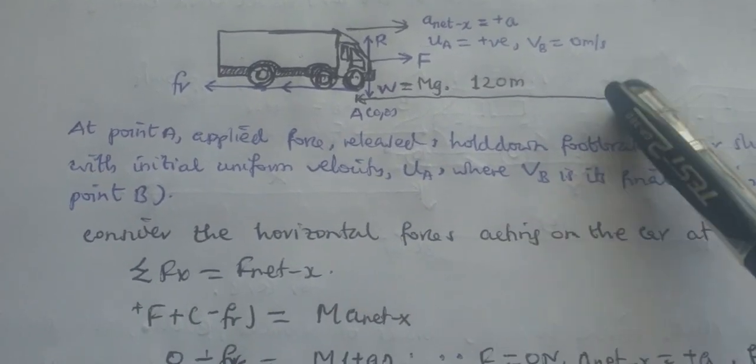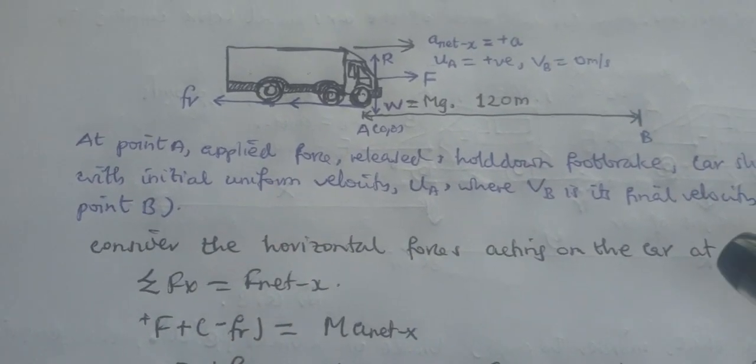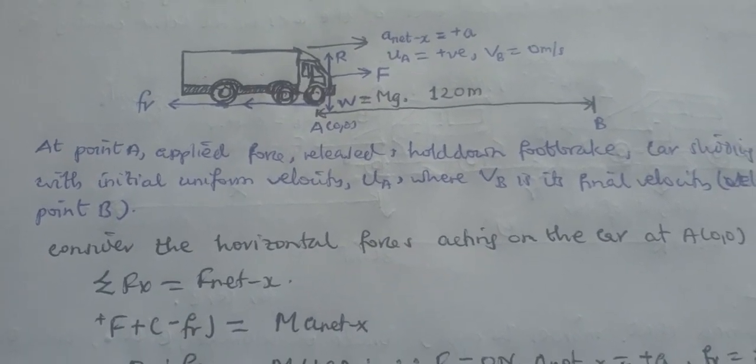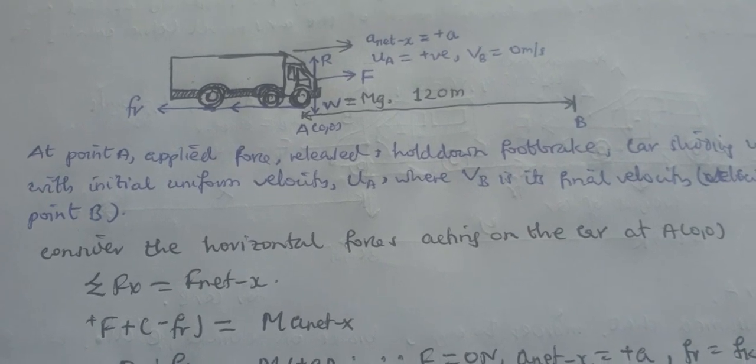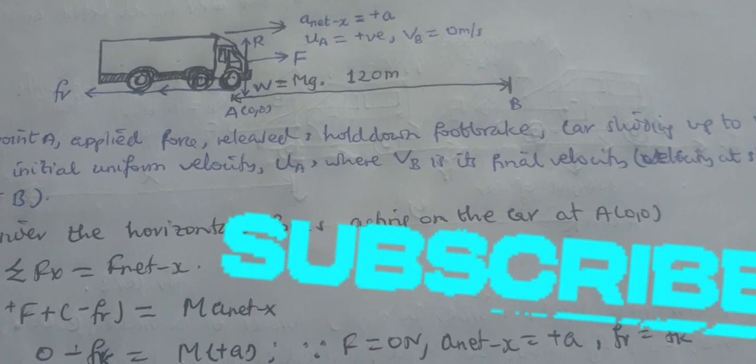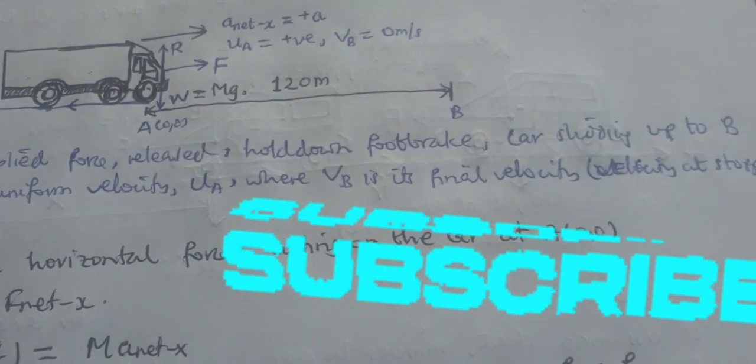Now at point B, we have some explanation and assumptions. We assume that at point A the applied force is released and the foot brake is held down, the car sliding up to point B.